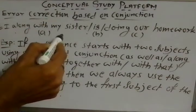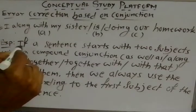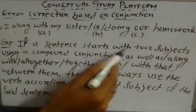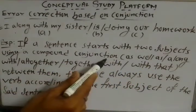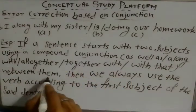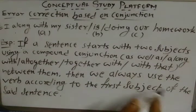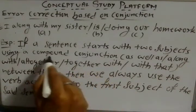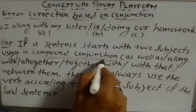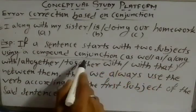If you are correcting these sentences, you need to know the explanation behind them. If a sentence starts with two subjects connected by a compound conjunction — such as 'as well as', 'along with', 'altogether', 'together with', or 'with that' — then we always use the verb according to the first subject of the sentence.